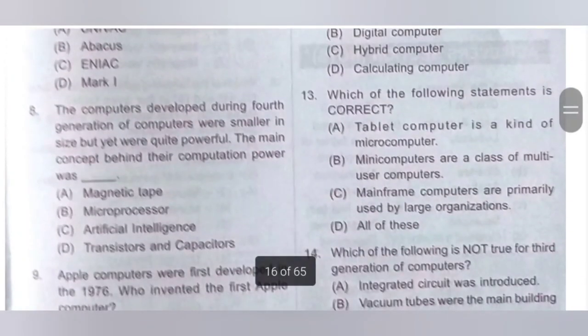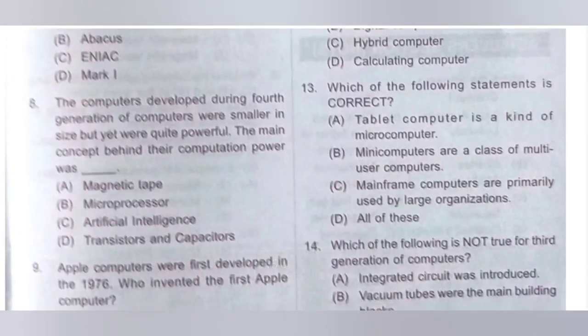13th question: Which of the following statements is correct? A. Tablet computer is a kind of micro computer — correct. B. Mini computers are a class of multi-user computers — correct. C. Mainframe computers are primarily used by large organizations — correct. So option D, all of these, is the correct answer, as all the above statements are correct.